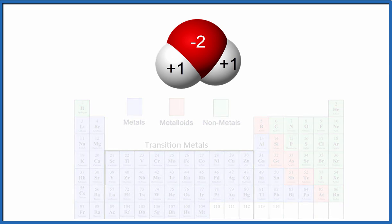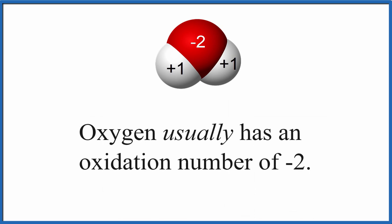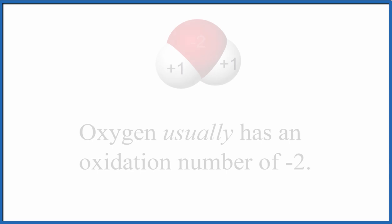You can also remember that oxygen usually has an oxidation number of minus two. There are two big exceptions to this rule, though.